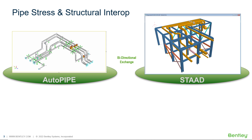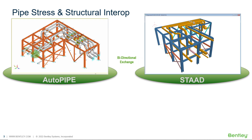Once that's done, the structural engineer can export the structural model and support connections that were made in STAAD, again through the pipe link file, over to AutoPipe. This pipe link file can be imported into AutoPipe, where the AutoPipe model is updated to include the structure and also the support connections that were made on the structural side.